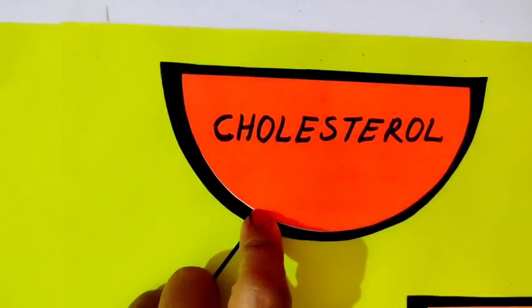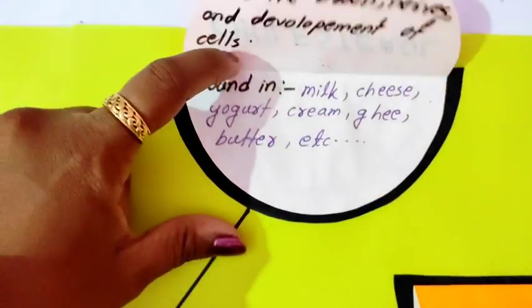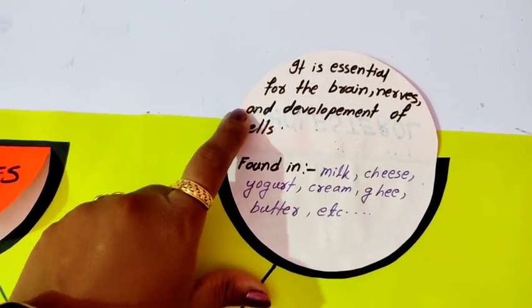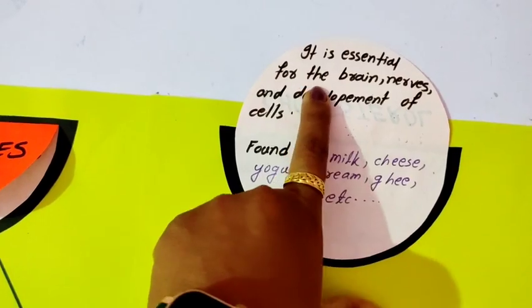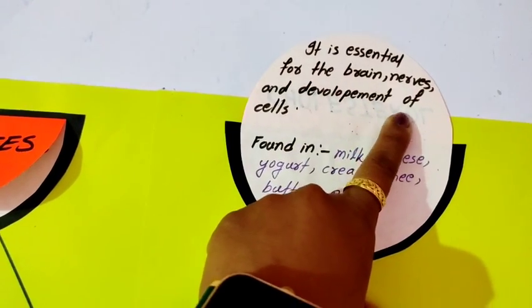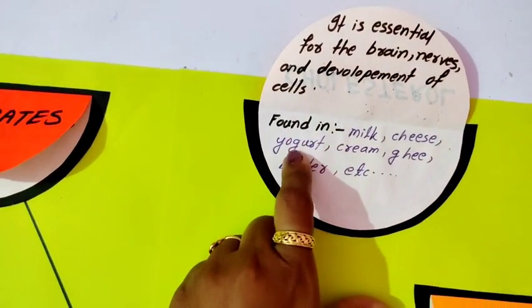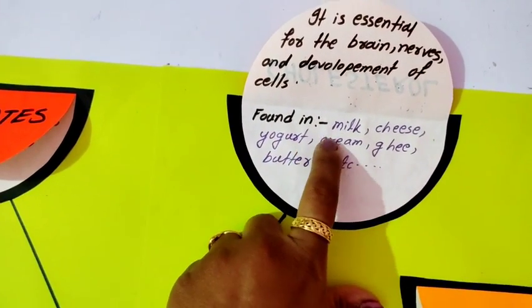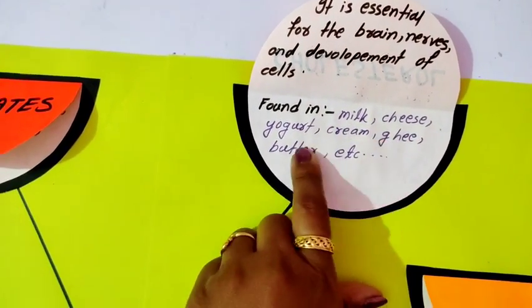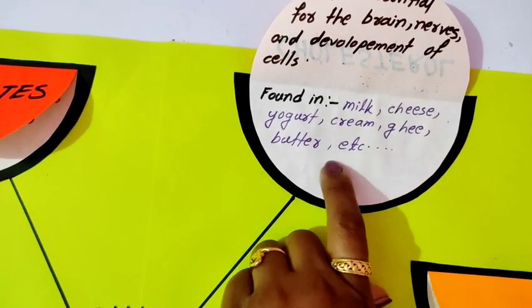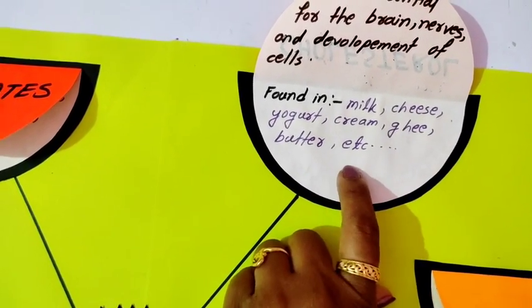Then cholesterol. It is essential for the brain, nerves, and development of cells. Found in milk, cheese, yogurt, cream, ghee, butter, etc.